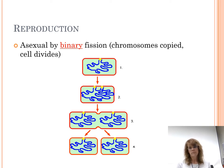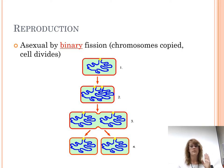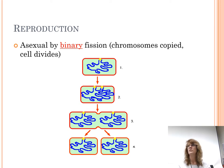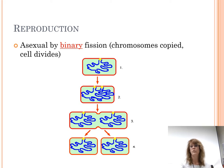Bacteria make more through something called binary fission. Bi means two, fission means to split — so binary fission basically means it splits in half. Both baby bacteria are twins — clones of each other. So the parent bacteria doubles the DNA, grows in size, and splits in half. Most bacteria can do binary fission about once every 20 minutes, so it doesn't take long for bacteria to multiply and spread throughout the environment.